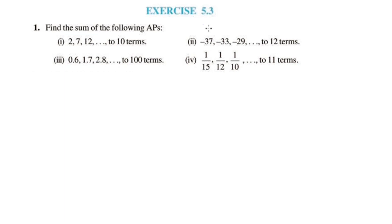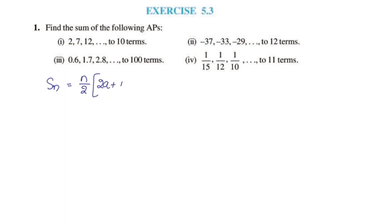We are going to do Exercise 5.3, Question number 1. If you like the videos, subscribe to the channel and share with your friends. The first question is: find the sum of the following APs. The formula is S = N/2 into (2A + (N-1) into D).